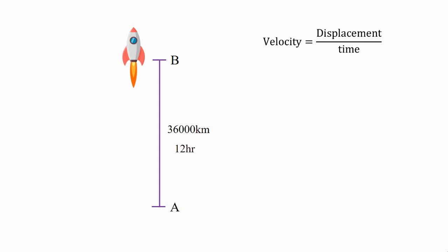When I mention velocity, it represents magnitude of velocity. Velocity is equal to 36,000 km upon 12 hours. Therefore, magnitude of the velocity is equal to 3,000 km per hour.